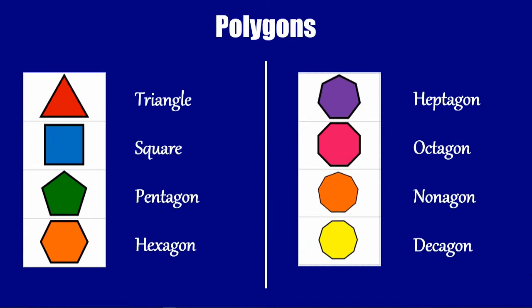Now here are some names of common polygons that you've probably seen before: the triangle, the square, the pentagon, the hexagon, the heptagon, the octagon, the nonagon, and the decagon.